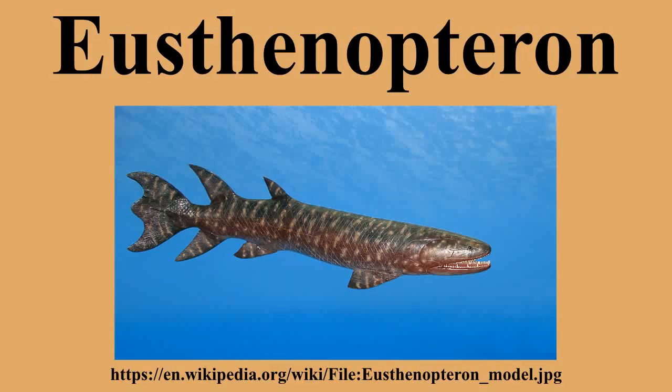Eusthenopteron is a genus of prehistoric Sarcopterygian which has attained an iconic status from its close relationships to tetrapods. Early depictions of this animal show it emerging onto land, however paleontologists now widely agree that it was a strictly aquatic animal. The genus Eusthenopteron is known from several species that lived during the late Devonian period, about 385 million years ago.